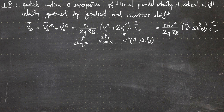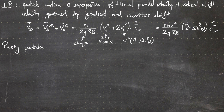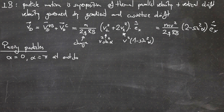Now if we have particles with both perpendicular and parallel components, we need to distinguish between two types. The first type are so-called passing particles. For passing particles, we assume the pitch angle alpha is either zero or roughly pi, and we start at the outboard side.